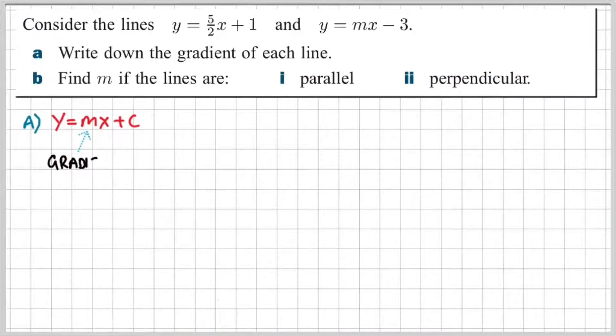So let's do this question here. It says consider the lines y equals five over two x plus one and y equals mx minus three. Write down the gradient of each line. And part B, find m, i.e. the gradient, if the lines are parallel and perpendicular. So part A then, write the gradient of each line.